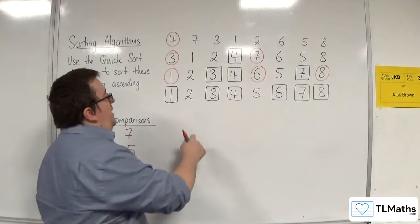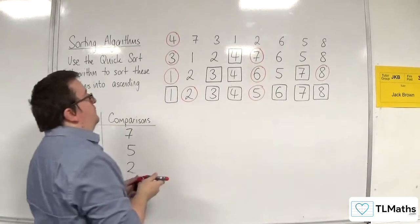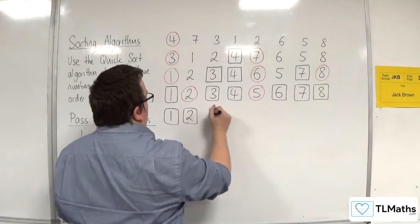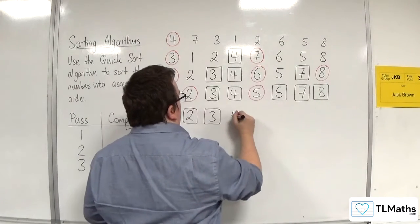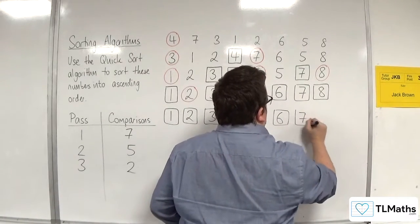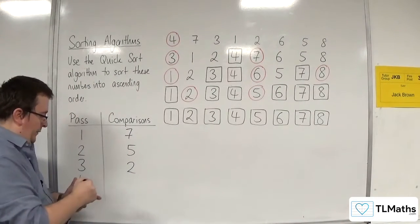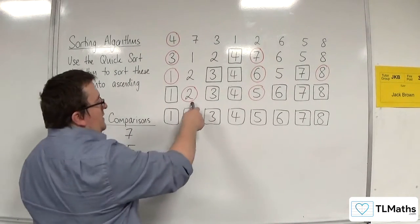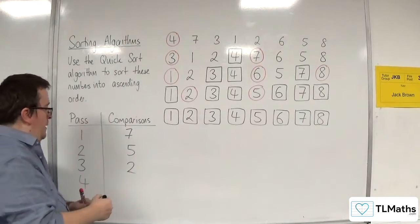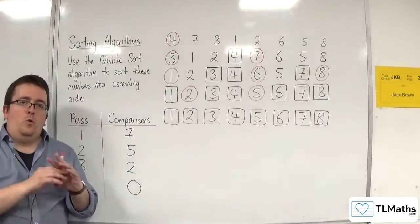Now we've got two sublists here, but they're both of size one. So that gets circled. That gets circled. So there's nothing to compare two with, so that gets boxed now. So three, four, five, six, seven, and eight. So on the fourth pass, how many comparisons did I make? Well, I didn't need to compare two with anything, and I didn't need to compare five with anything. So there were zero comparisons on the final pass. So once there were zero comparisons, we are done.